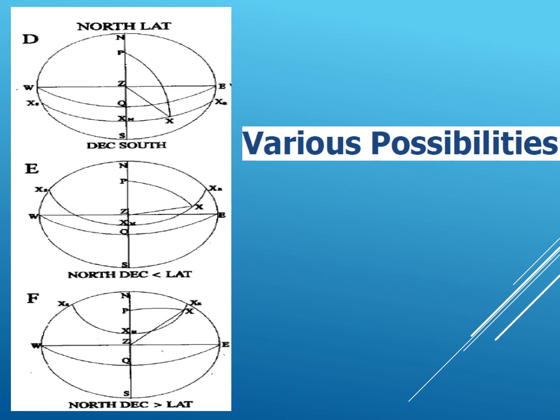In the first case, the latitude of the observer is north. The celestial equator is denoted by WQE, the equinoctial. You can see the celestial body's passage: XR on the right is the rising, XM is the point of meridian passage when the celestial body has reached its meridian passage for the observer Z, and XS on the left is the setting. The celestial body rises from the east, transits, and sets on the west, reaching its maximum altitude exactly on the observer's meridian.